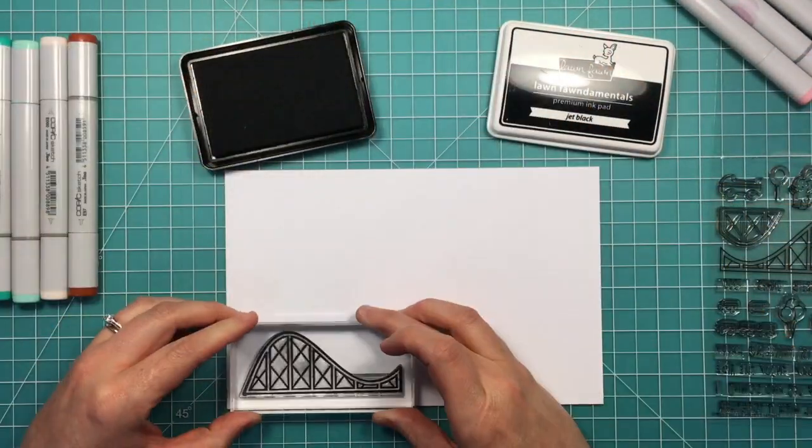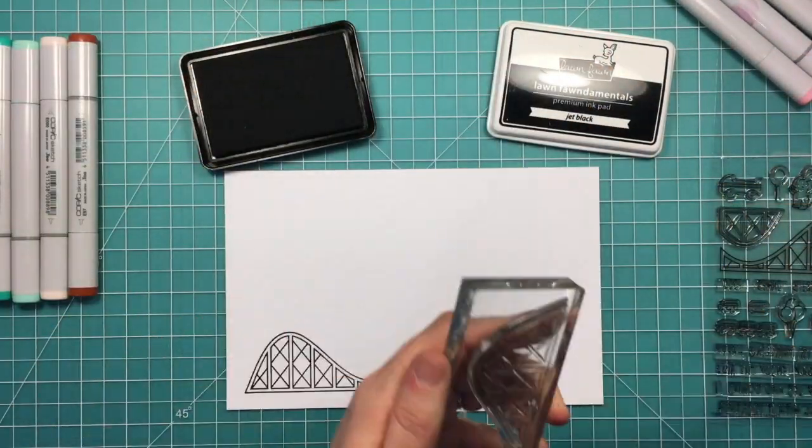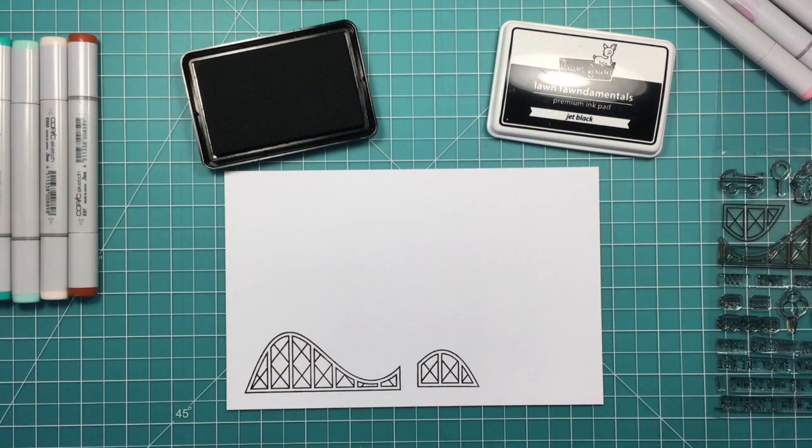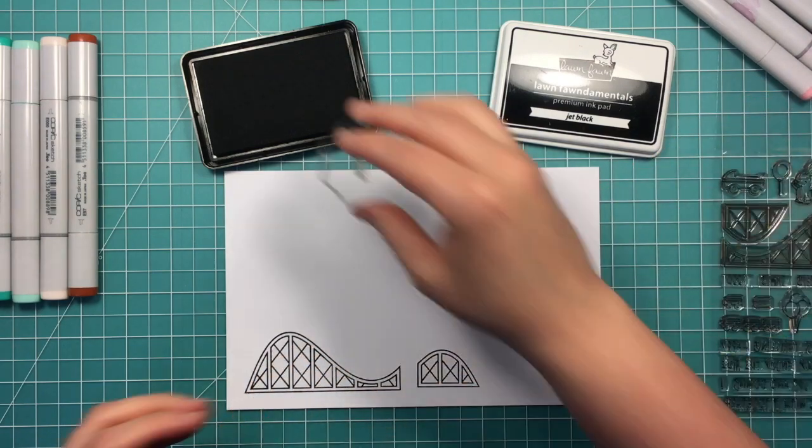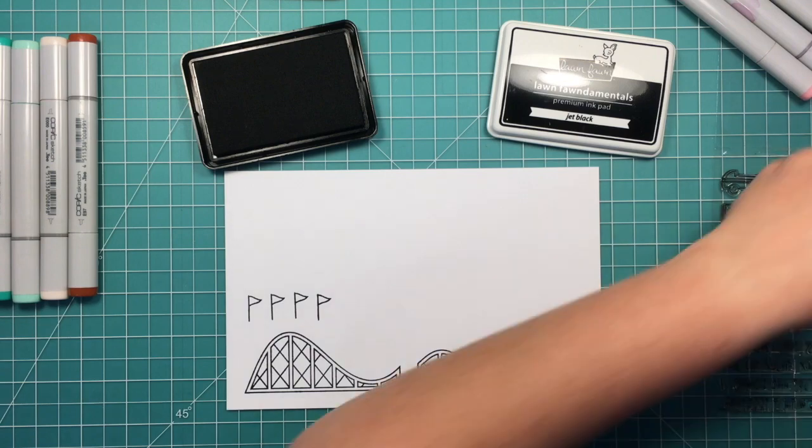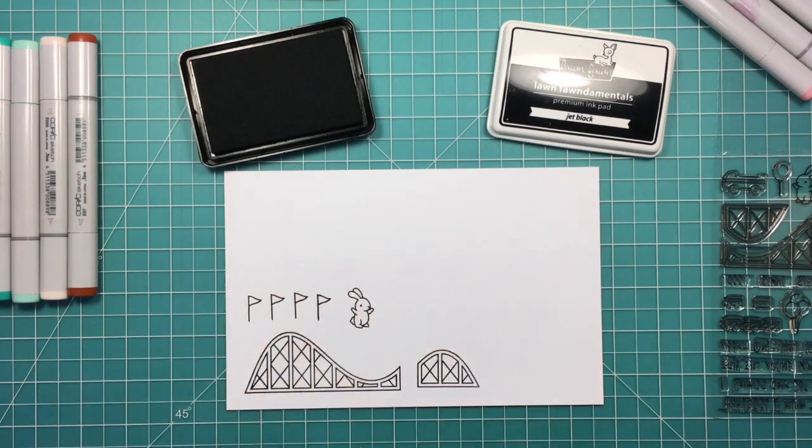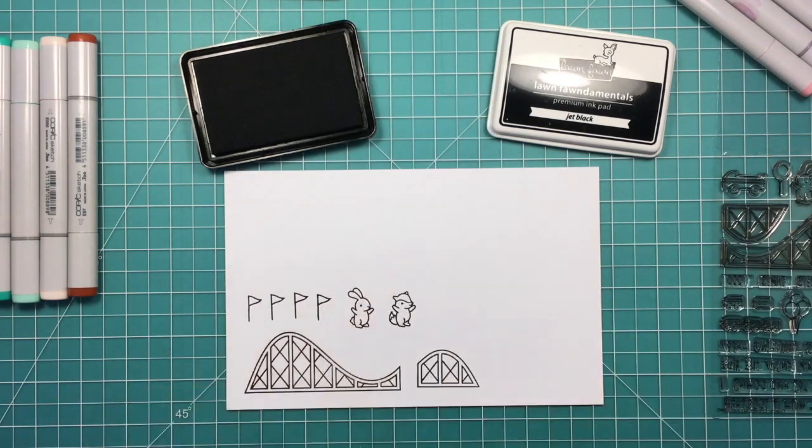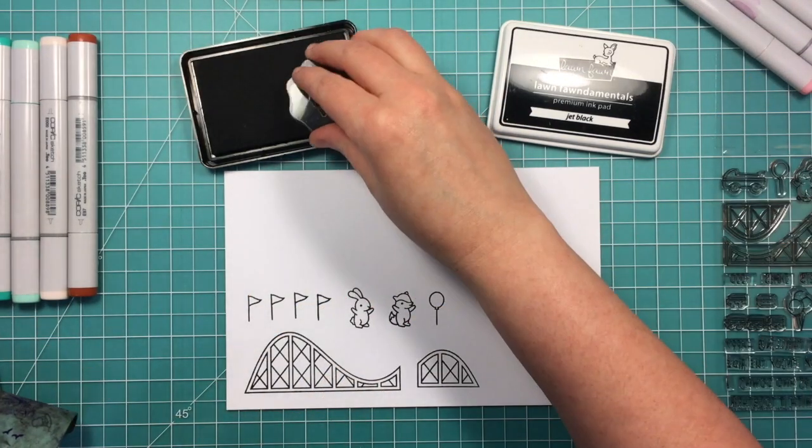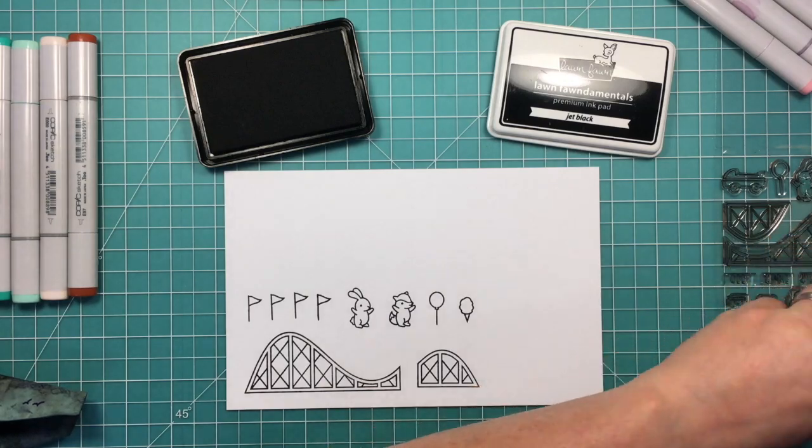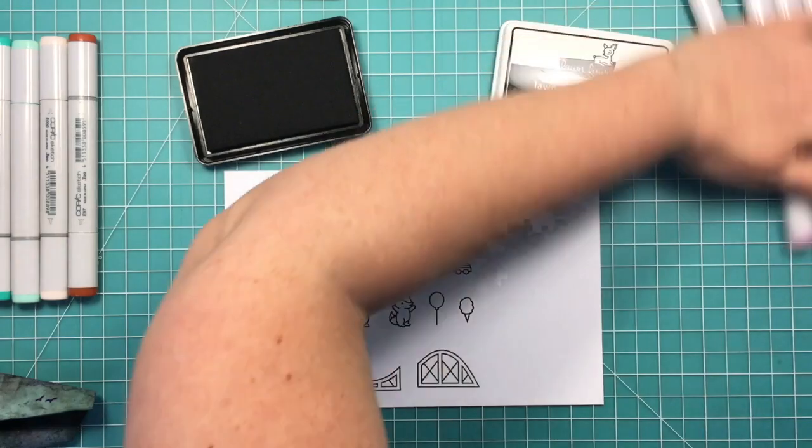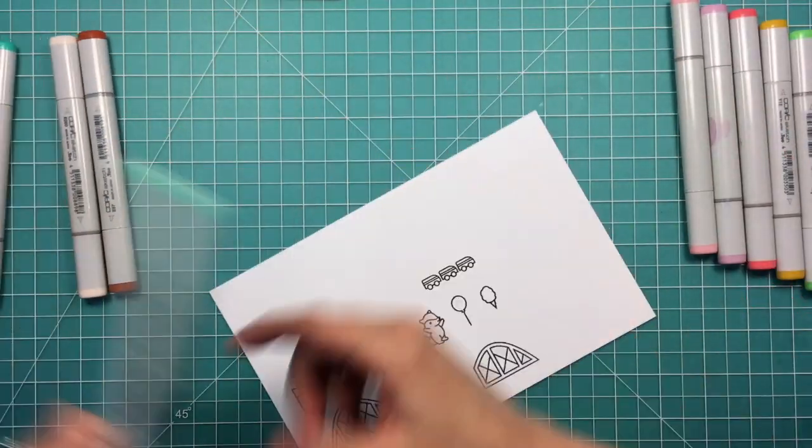Now that I've got all those pieces cut out I'm going to work on stamping my images. I'm going to stamp out both pieces of the roller coaster that come in this stamp set as well as a couple of the little pennant flags which I'll add to the top of my roller coaster. A couple of the cute little critters here to add to my scene. And some things for those critters to hold, the balloon and the cotton candy, and then the small roller coaster to go in the background.